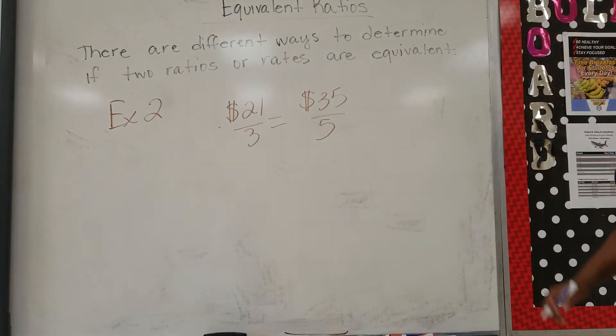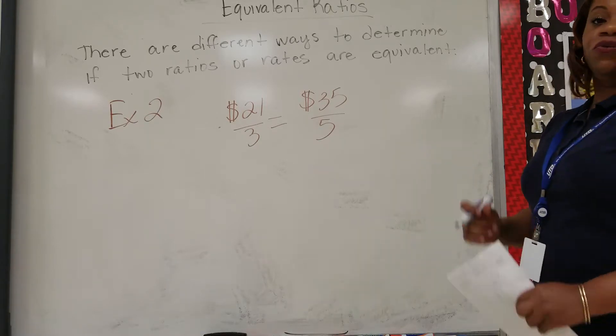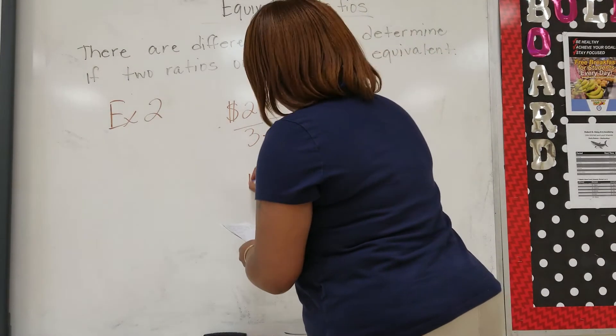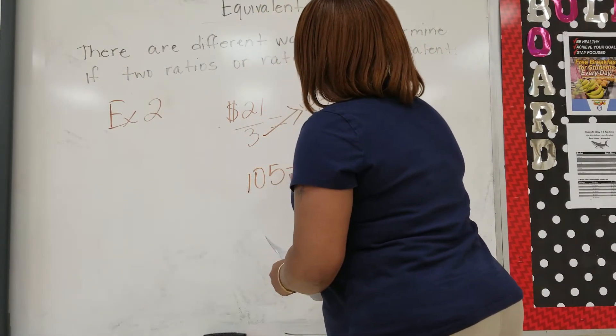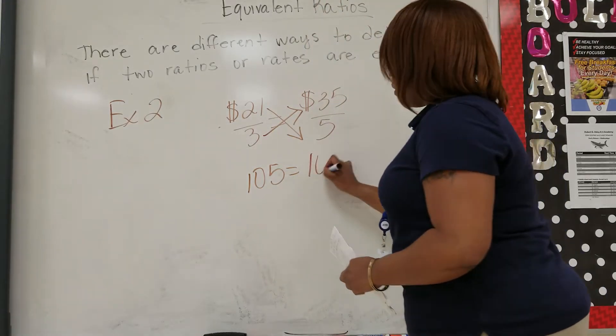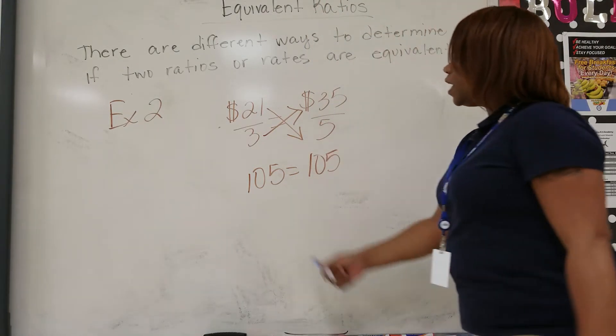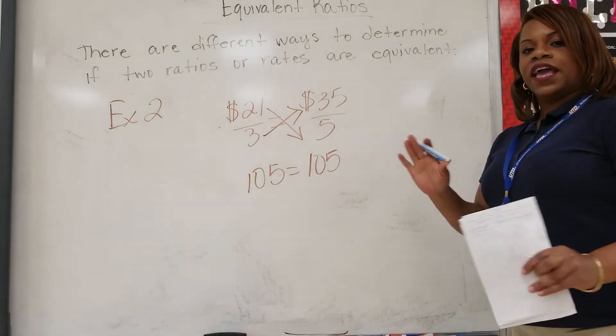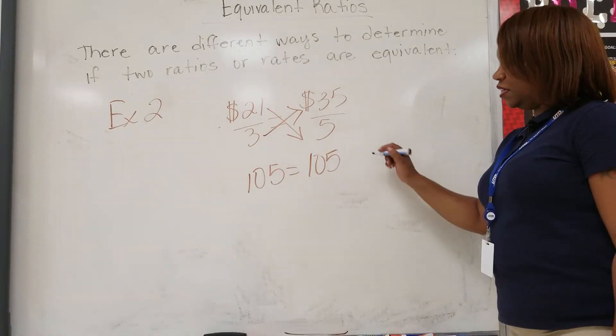Here you have 21 to 3 equals 35 to 5. So again we cross multiply. 3 times 35 will give us 105. 21 times 5 will also give us 105. And as you can see, 105 does equal 105, and so therefore they are equivalent.